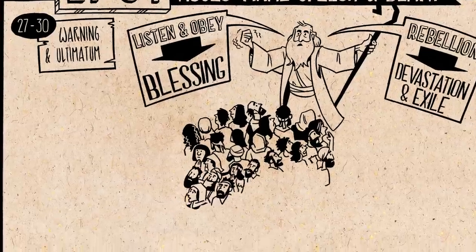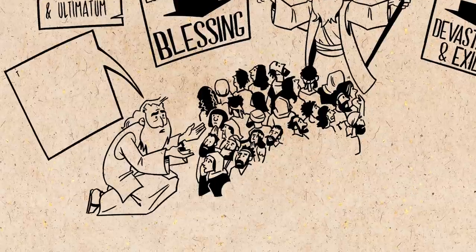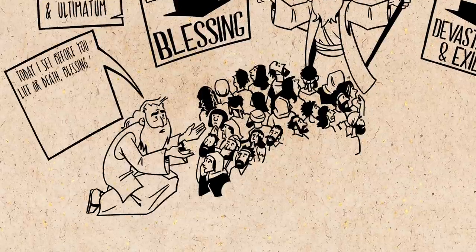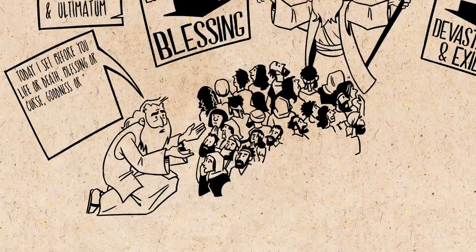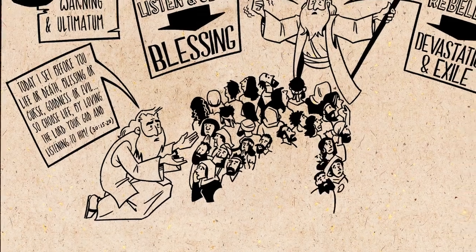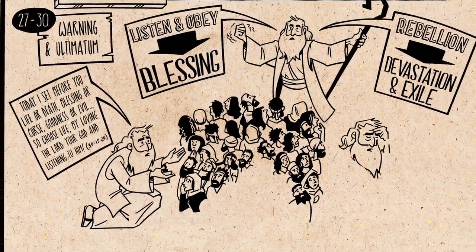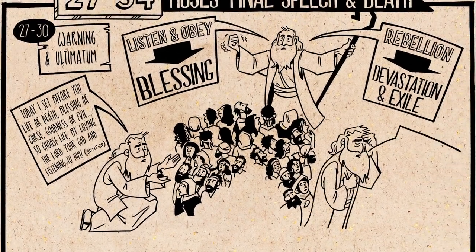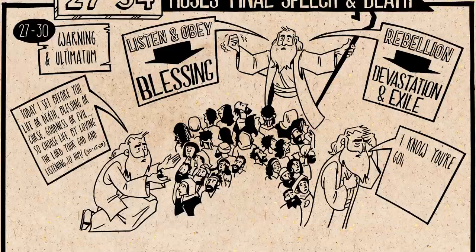Then Moses forces a decision. He says, today I set before you life or death, blessing or curse, goodness or evil — so choose life by loving the Lord your God and listening to him. But then Moses says that he knows after he dies, they are going to rebel and turn away from God and end up in exile.